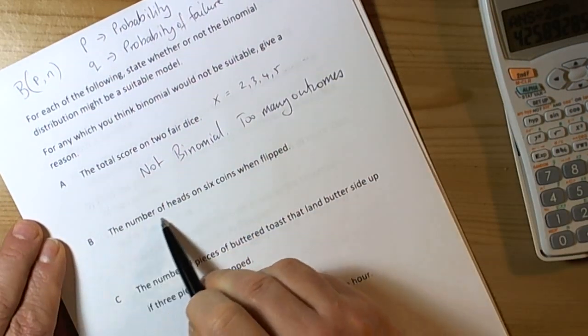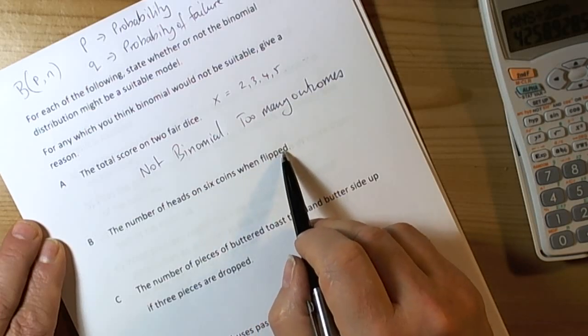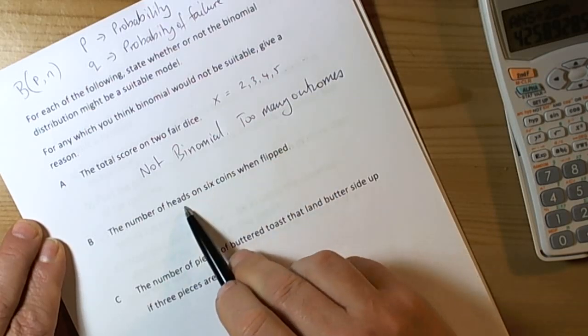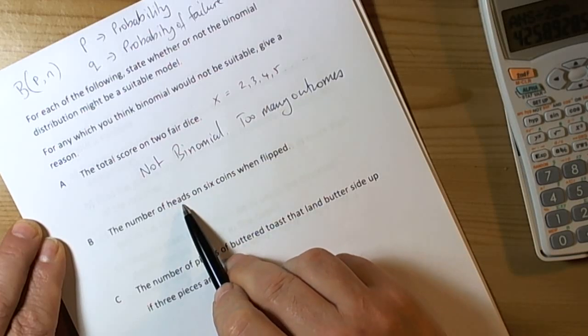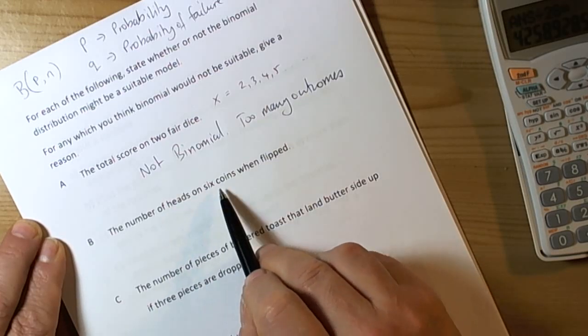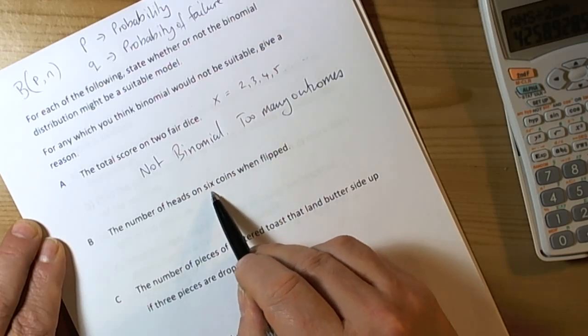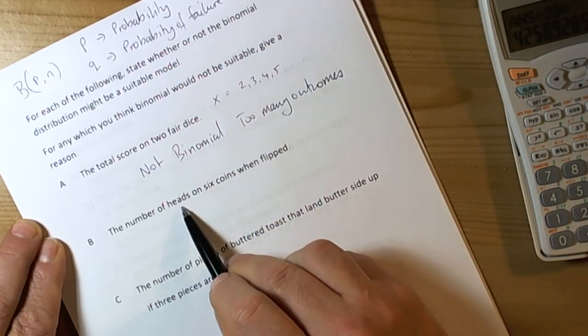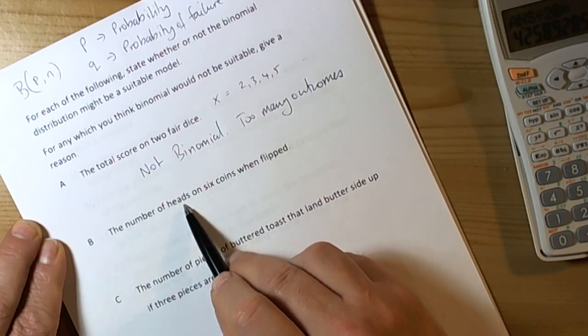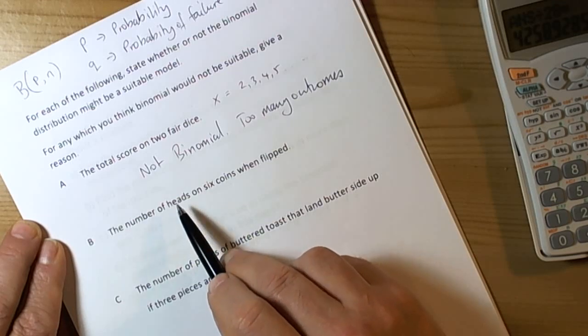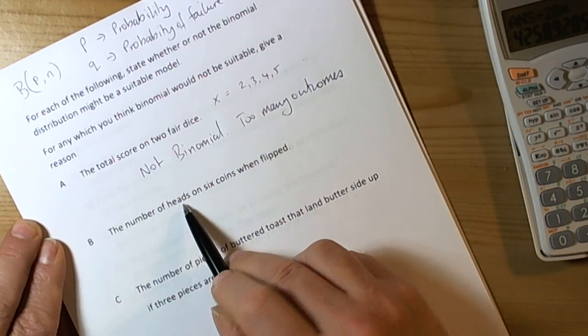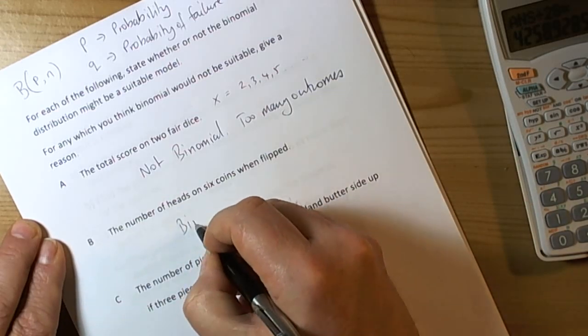B, we're talking about the number of heads on 6 coins when flipped. This straight away looks like it might be binomial because there's only two outcomes: you either get a head or a tail. You check whether it's a fixed number of trials. Yep, 6 coins is fixed. Are the probabilities independent? Each time you toss a coin it doesn't affect the probability of the next one. The probability of heads or tails doesn't change, it's 0.5 each time. So this will be binomial.